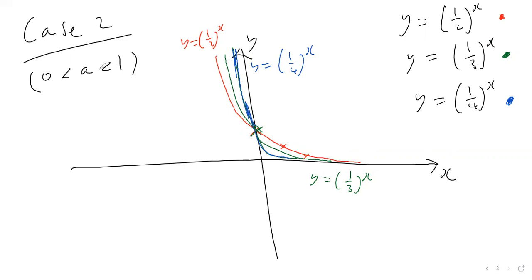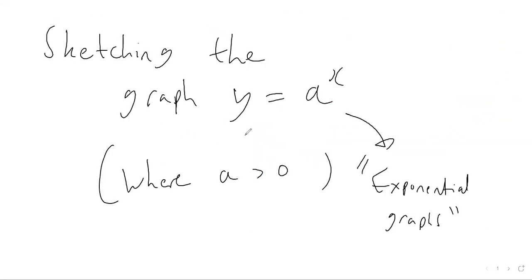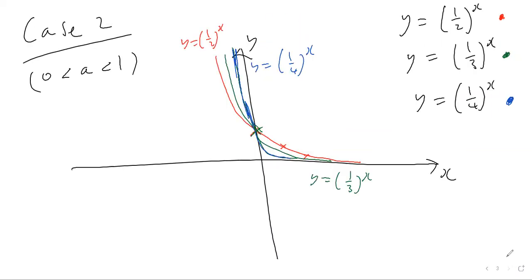The reason we only consider positive values of a is that when you raise negative numbers to the power of negative fractions, you get undefined results. So you don't need to worry about plotting exponential graphs when a is less than zero — you only need to consider a between zero and one, or a greater than or equal to one.